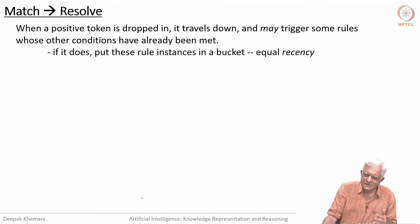The next question we want to answer is: how do we implement the different conflict resolution strategies we spoke about? When a positive token is dropped in, it travels down and may trigger some rules because that may be the last token some rules are waiting for, whose other conditions have already been met. If that happens, put these rule instances in a bucket, and they will all have the same recency. When this working memory element came in, let us say it triggered rules 3, 4, and 5, and it triggered them at the same time. All those rules—3, 4, and 5—will have the same recency. In this way, you can keep track of recency.